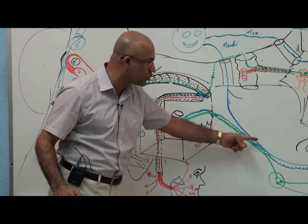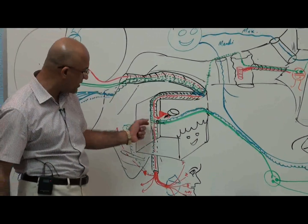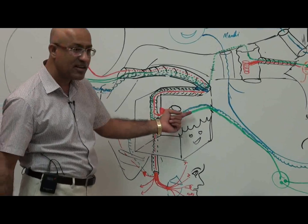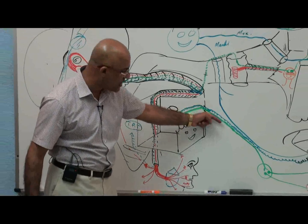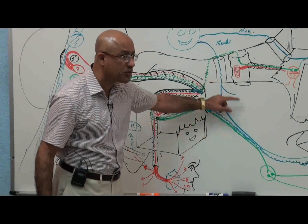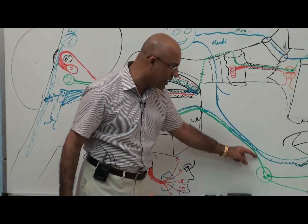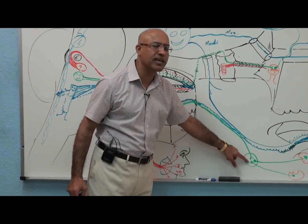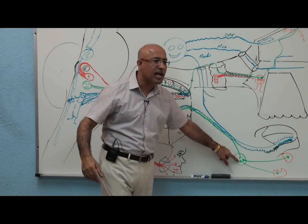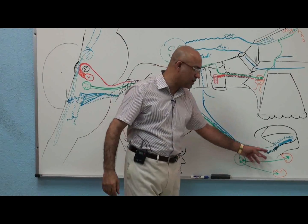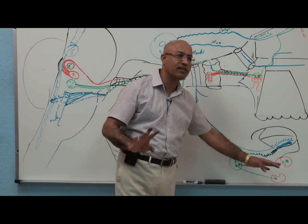Chorda tympani fuses with the lingual nerve. The parasympathetic fibers jump as chorda tympani along with the taste fibers, exit at the petrotympanic fissure, and in the infratemporal fossa they meet the lingual nerve. Moving a little with the lingual nerve, the preganglionic fibers eventually depart and end at the submandibular ganglion. From the submandibular ganglion, postganglionic fibers go to the submandibular gland and sublingual gland.